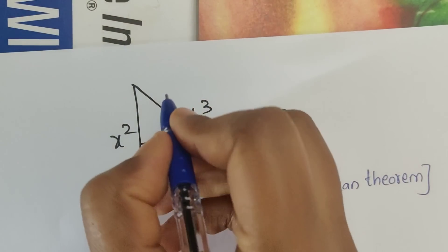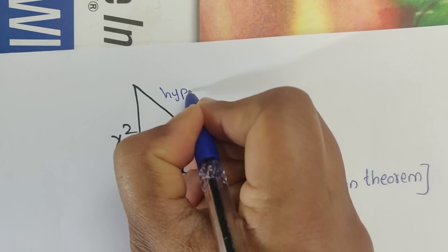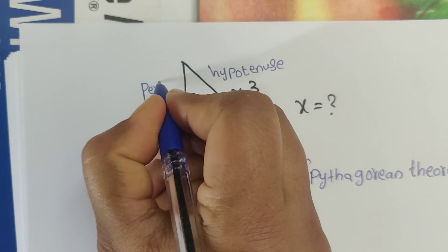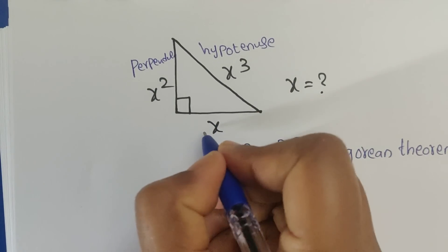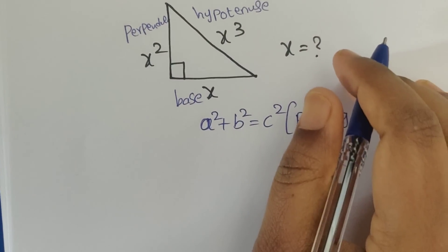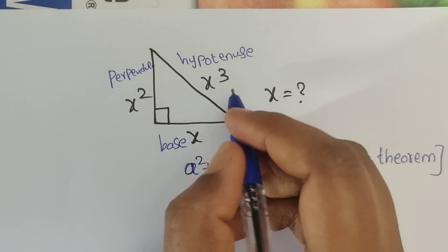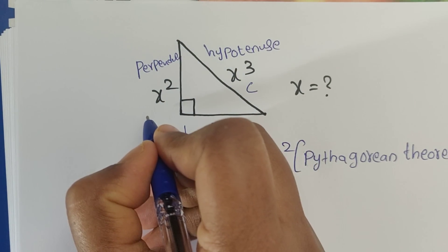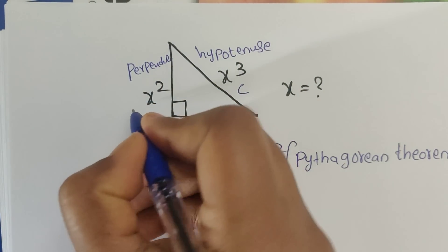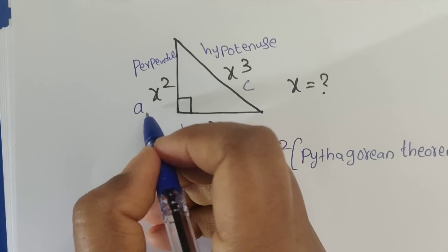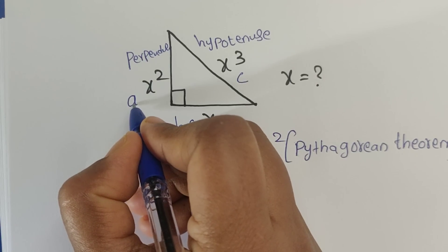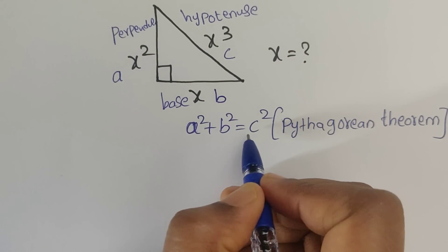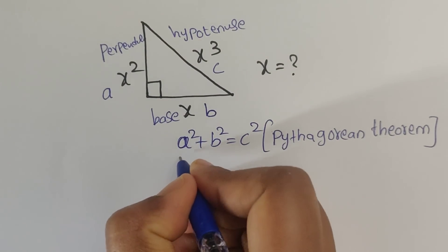See here — this is the hypotenuse side, this is the perpendicular side, and this is the base side. C is always going to be the hypotenuse side. It doesn't matter which is a and which is b, so I am putting a here and b here.